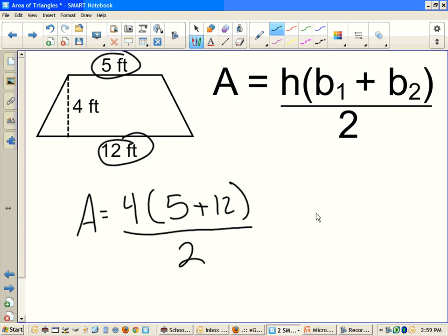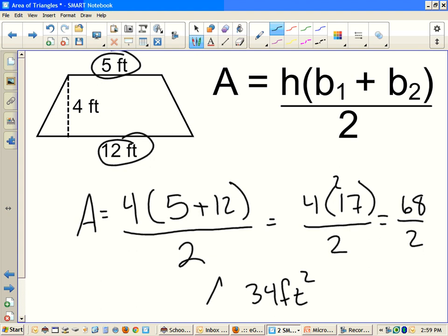So we know that 5 plus 12 is going to equal 17. And then we just have to do 17 times 4. 4 times 7 is 28, carry the 2. 4 times 1 is 4, plus 2 is 6. And then all we have to do now is divide that by 2, and we get 34 feet squared, because we're talking about area.